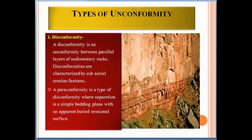There are four types of unconformity. The first is disconformity — a disconformity is an unconformity between parallel layers of sedimentary rocks, characterized by sub-aerial erosion features. As you can see, these rock layers are parallel. A para-unconformity is a type of disconformity where the separation is a simple bedding plane with no apparent buried original surface.